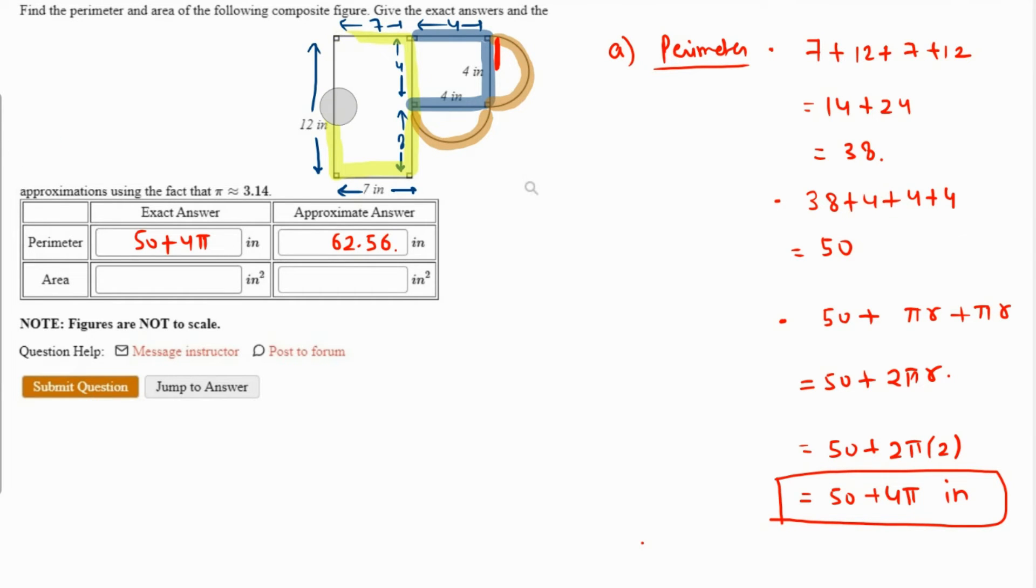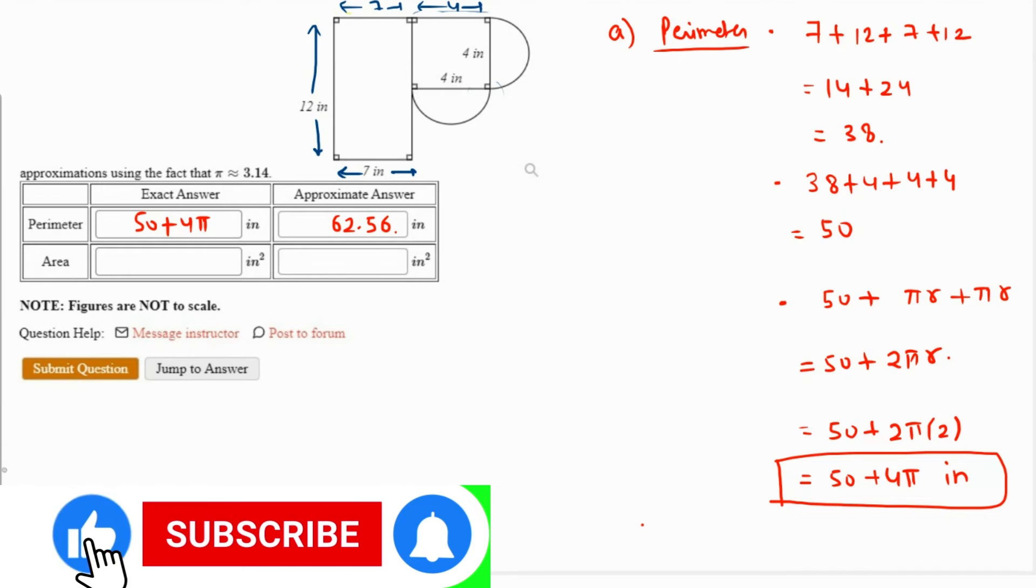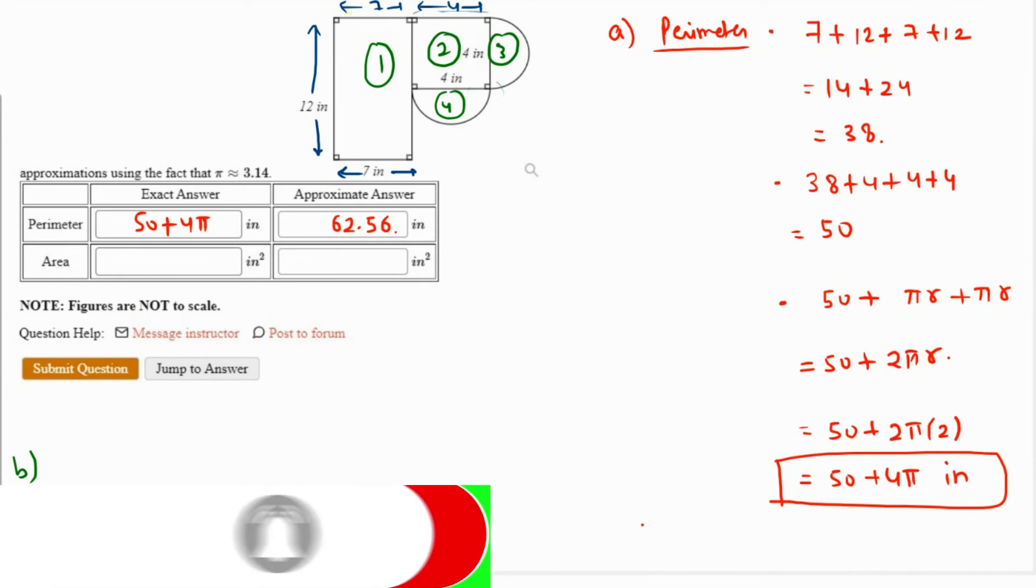Now if you work with the area, then we have to divide the figure into some parts. Like this is the first part, this is the second part, this is the third part, this is the fourth part. So area is the sum of all these parts.